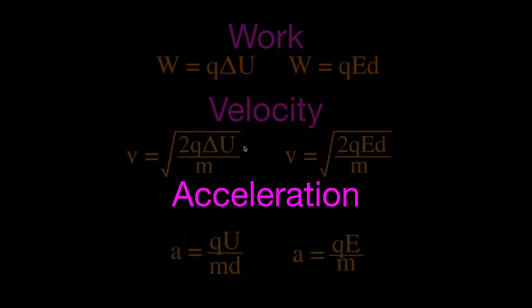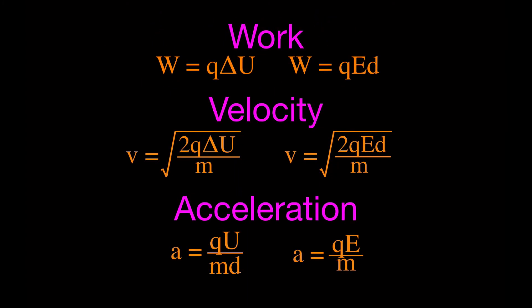Here we have all six equations on the summary page. Each pair of equations is equivalent: one uses electric field strength and distance, the other uses potential difference, since V = E × d.